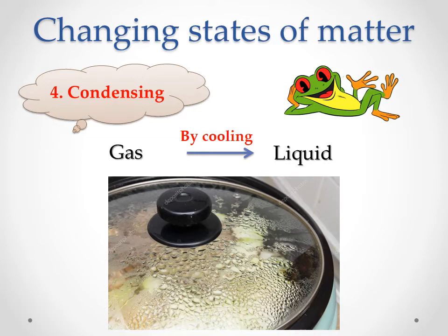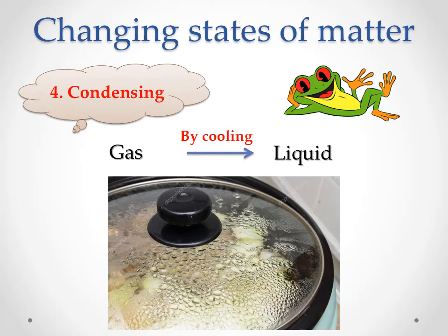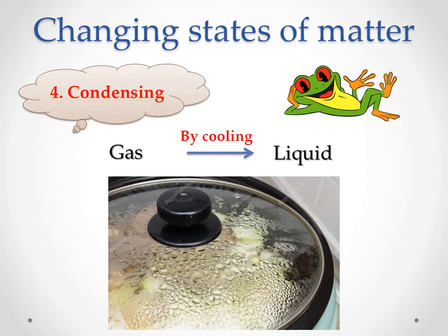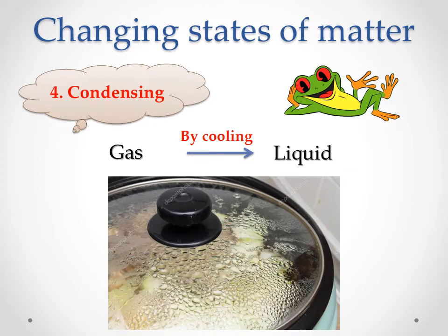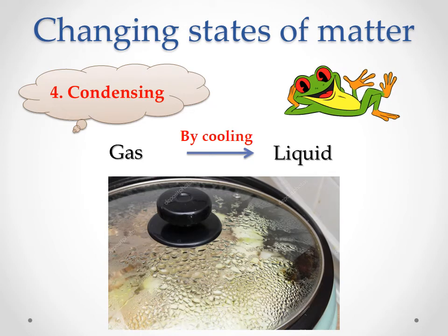Again, when you boil water or cook food and the water vapor comes out and hits the lid of the pot, it turns to liquid again. The water vapor, which is gas, turns to water, which is liquid. This is done by the condensing process. So gaseous state changes to liquid state by condensing.